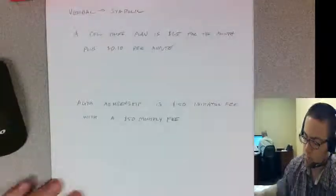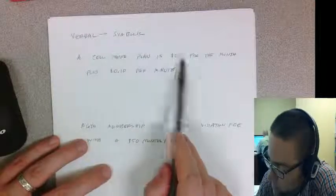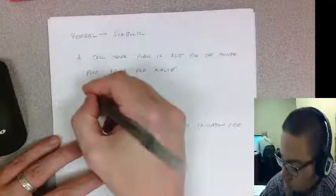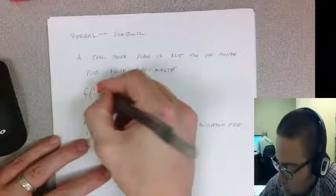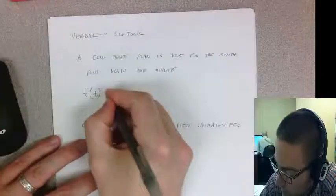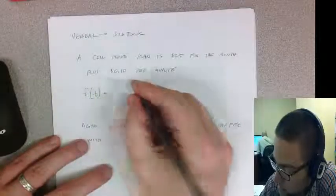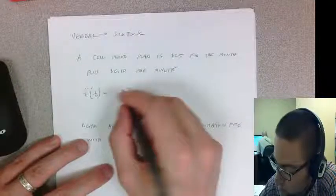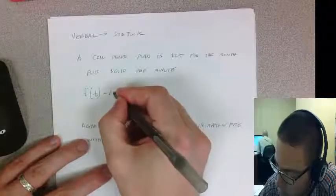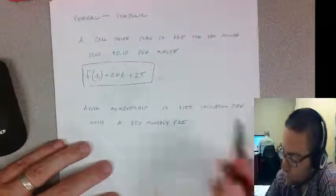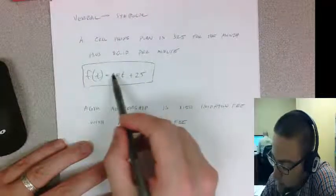Let's do verbal to symbolic. A cell phone plan is $25 for the month plus 10 cents per minute. I'll write a function f(t) with respect to time for the total cost. It's $25 whether I make a call or not—that's my starting value. Then it's 10 cents times the number of minutes, so 0.10t. That's my function: f(t) = 0.10t + 25. For every minute I pay an additional 10 cents.